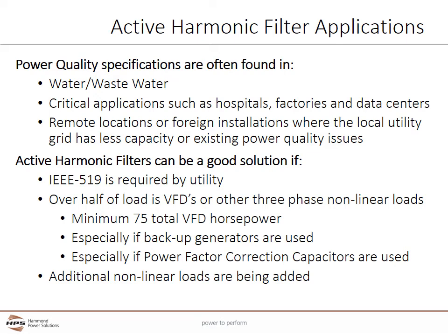Active harmonic filters can be used if over half of the load is VFDs or other three-phase nonlinear loads. If VFDs are involved, generally a minimum of 75 total VFD horsepower is needed before you would start to consider an active harmonic filter. Active harmonic filters can decrease the size of backup generators and help protect power factor correction capacitors from being damaged by harmonic currents. Consider active harmonic filters if additional nonlinear loads are being added that could stress the current power system.